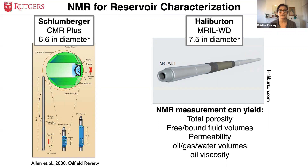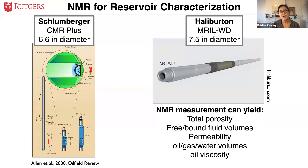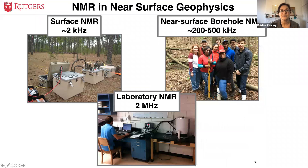The parameters measurable with NMR for reservoir characterization are also really useful for aquifer evaluation and characterization. But these tools used in reservoir characterization are really big — the Schlumberger tool is 6.6 inches in diameter and the Halliburton tool is 7.5 inches in diameter. So they couldn't initially be used for near-surface measurements.